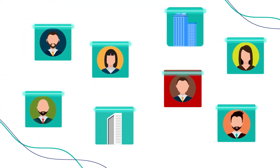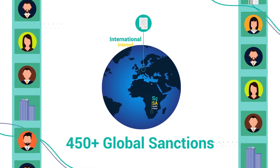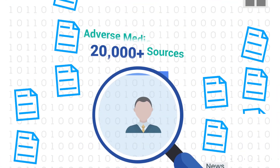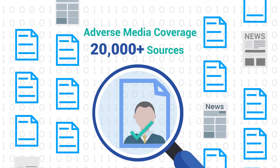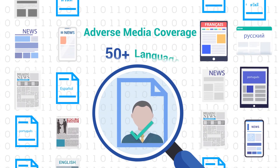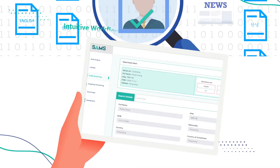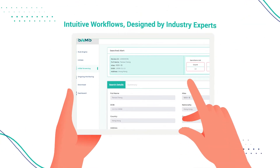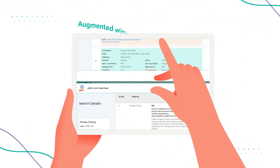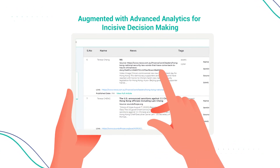SAMS also empowers you to validate your client list against over 450-plus global sanctions and watch list databases, and provides adverse media coverage from more than 20,000 sources in 50-plus languages. SAMS intuitive workflows are designed by leading industry experts and are augmented with advanced analytics for incisive decision-making.